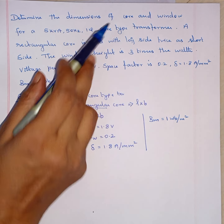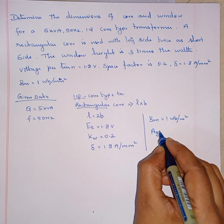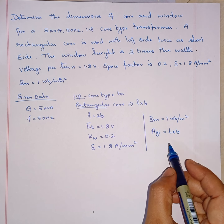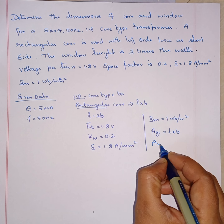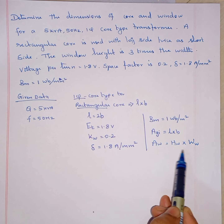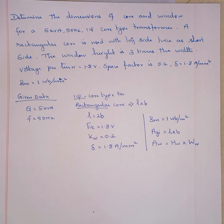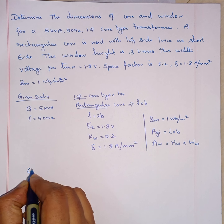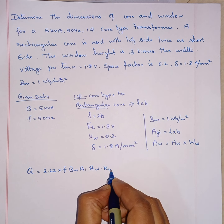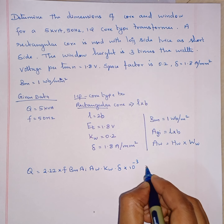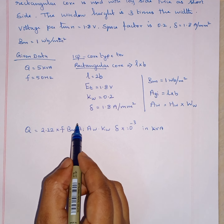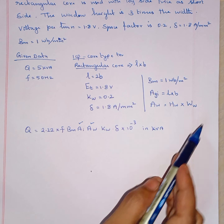Our aim is to find out dimensions of the core — which is first the area of the core. The gross iron area AGI is equal to L into B, so we have to find out L and B. Then area of the window: area of the window is equal to height of the window into width of the window. These are the dimensions: L, B, height of the window and width of the window. These type of problems use only a few formulas. First one: Q is equal to 2.22 F BM AI AW KW delta into 10 power minus 3. This is to represent Q substituted in kVA. Our aim is to find out AI and AW, from which we can find all dimensions.